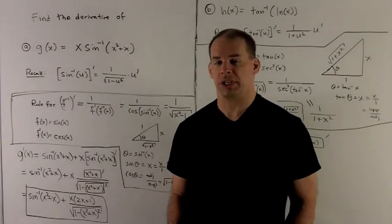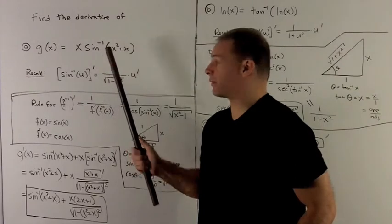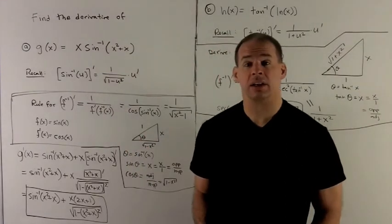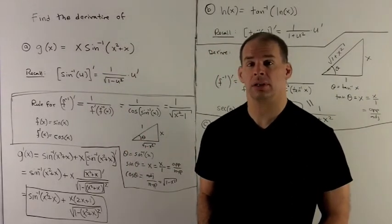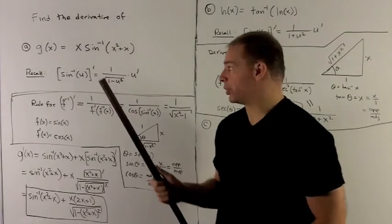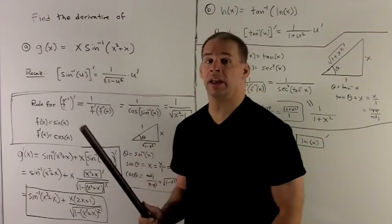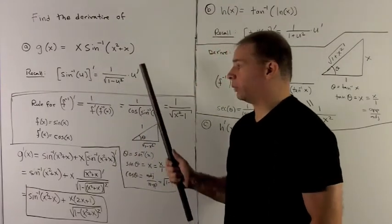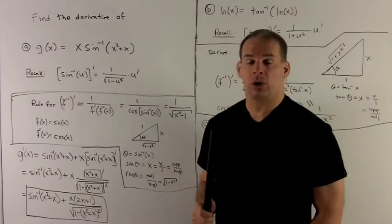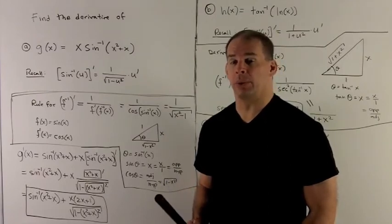Find the derivative of g of x equal to x times the inverse sine of x squared plus x. First, recall the rule for the derivative of inverse sine, using u as a function of x on the inside. The rule is 1 over the radical of 1 minus u squared, times the derivative of u.